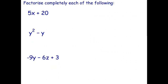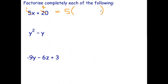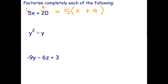Let's start factorizing. For 5x+20: this second term doesn't contain x, so the HCF will be just a number. 5 goes into 5 once and 5 goes into 20 four times, so the highest common factor is 5. Then 5 times what gives 5x? Answer is x. 5 times what gives 20? That's 4. So 5x+20 factorized is 5(x+4). Check: 5×x=5x, 5×4=20.